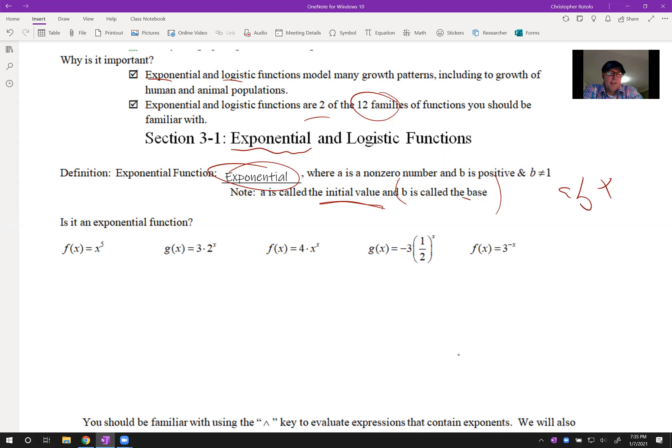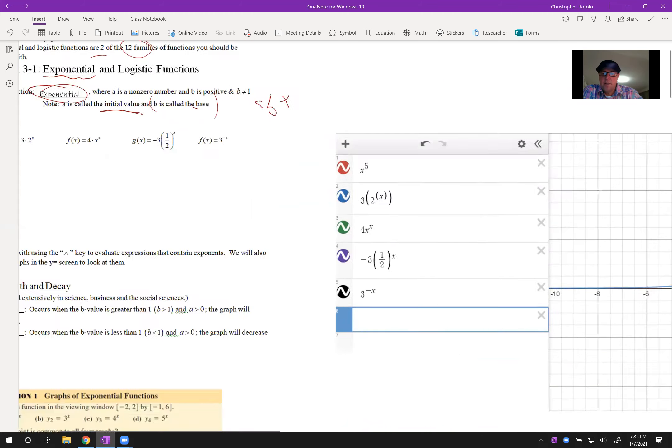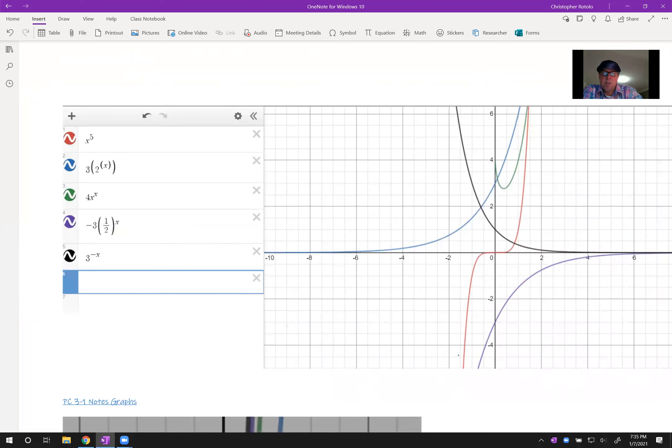So what we want to know is, out of these, which ones are exponential functions? Just because it has an exponent doesn't mean it is. Over here, I have the graph of all of them, and it looks like a mess. But we're just going to go through each one. x^5 here in red, that's definitely not going to be exponential.